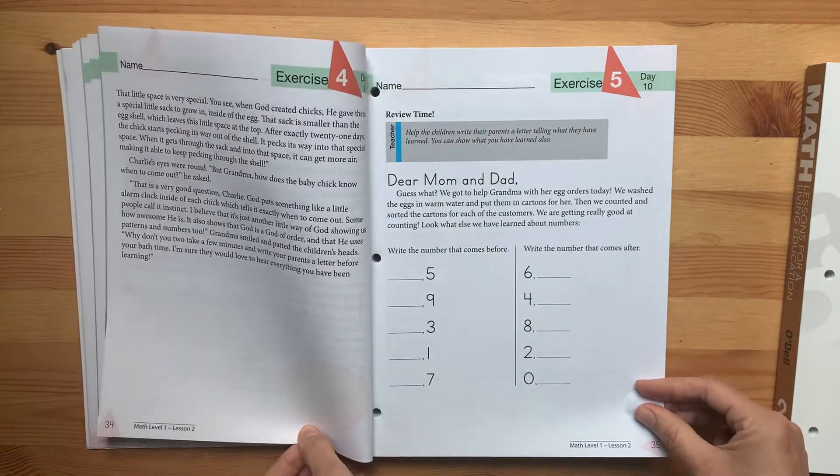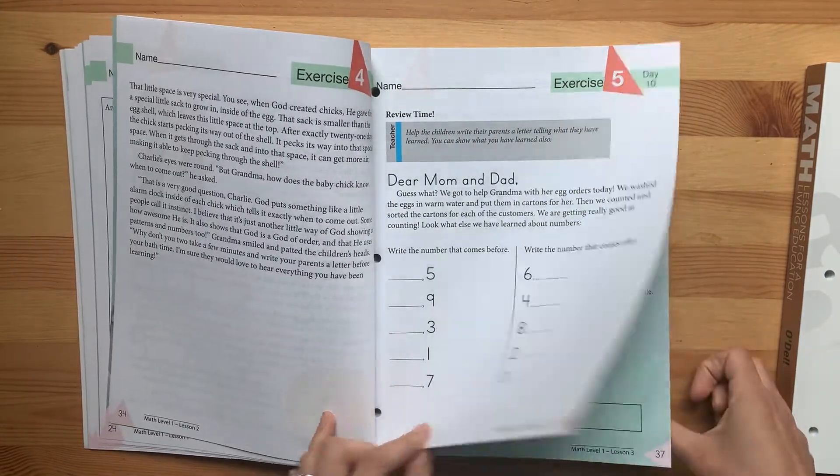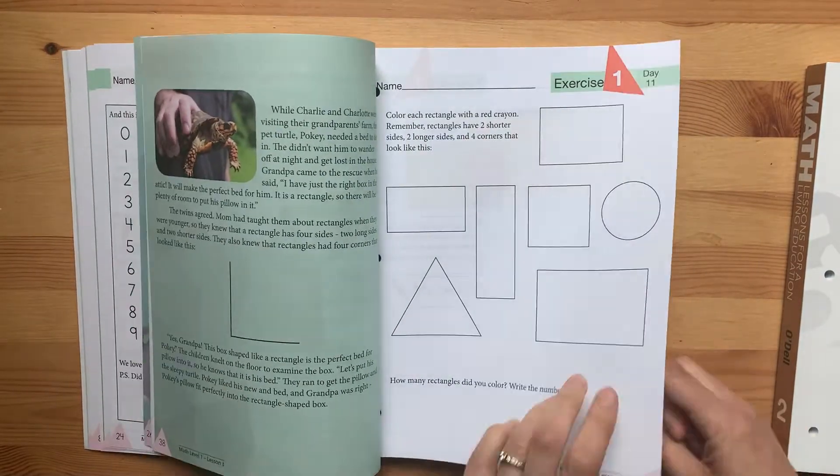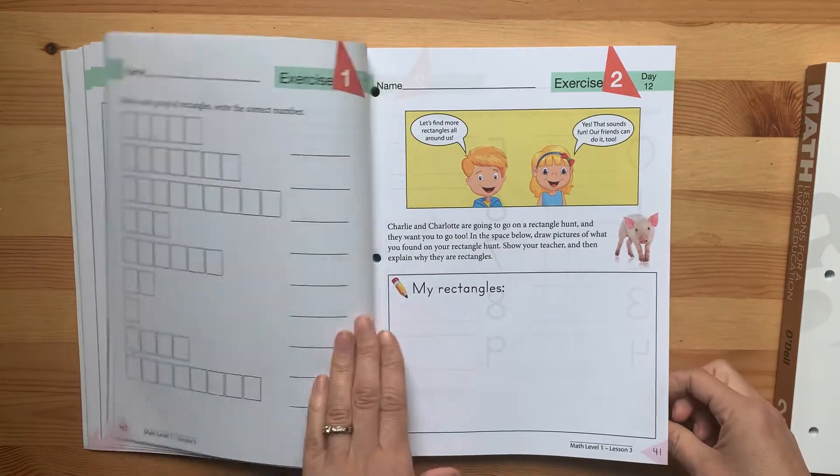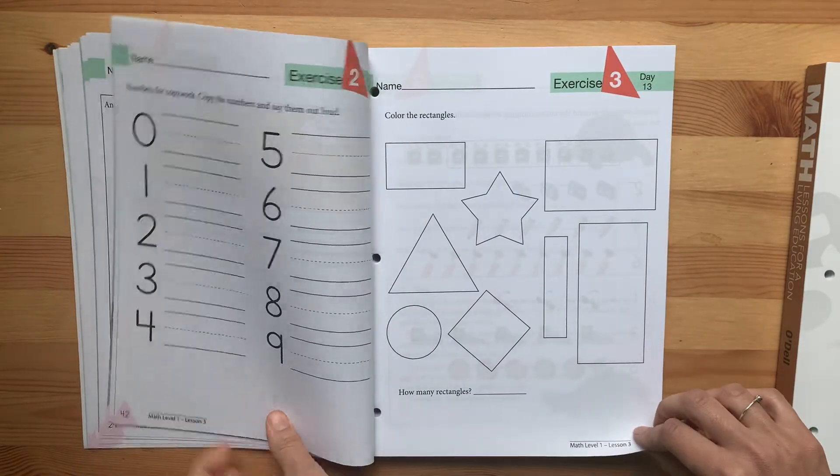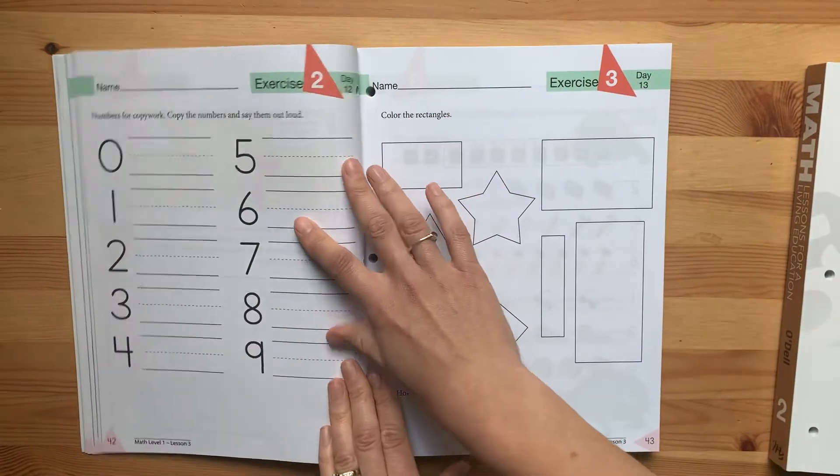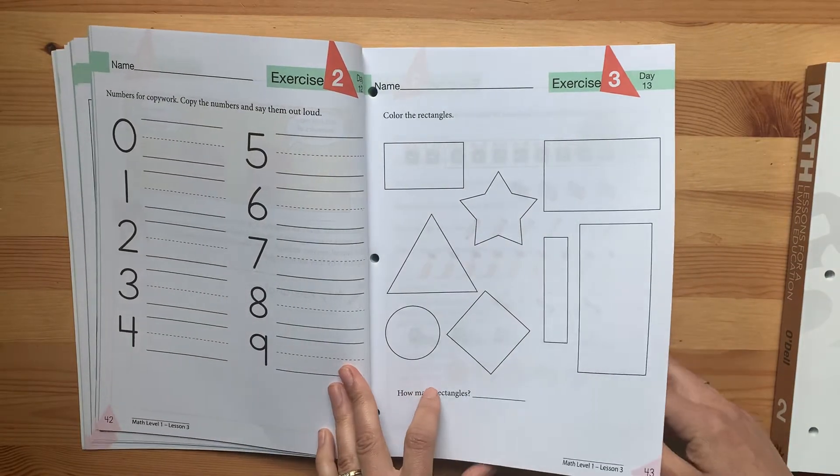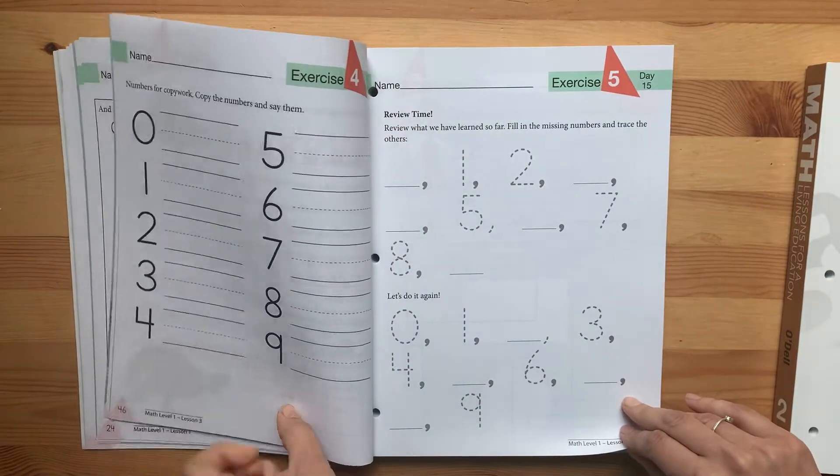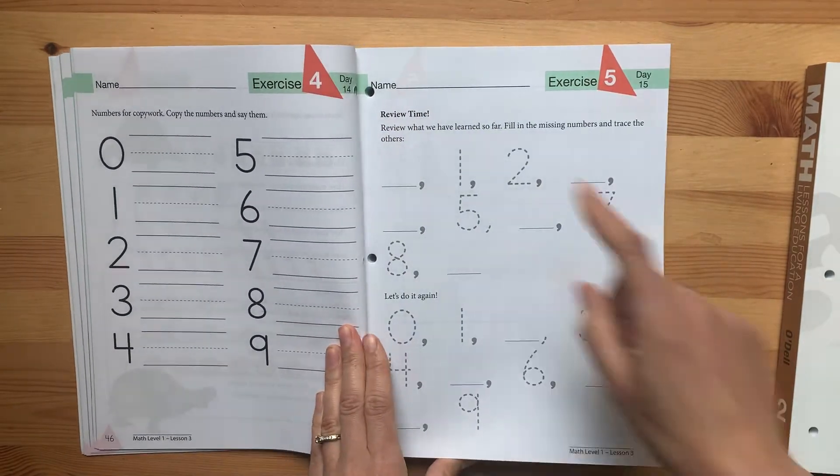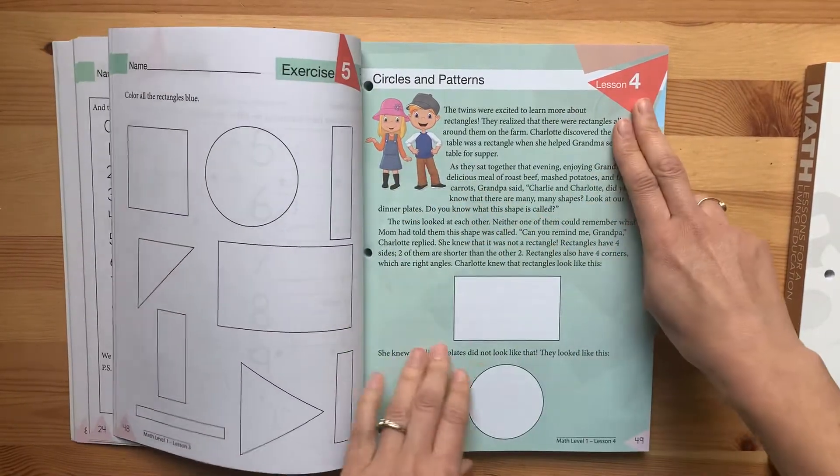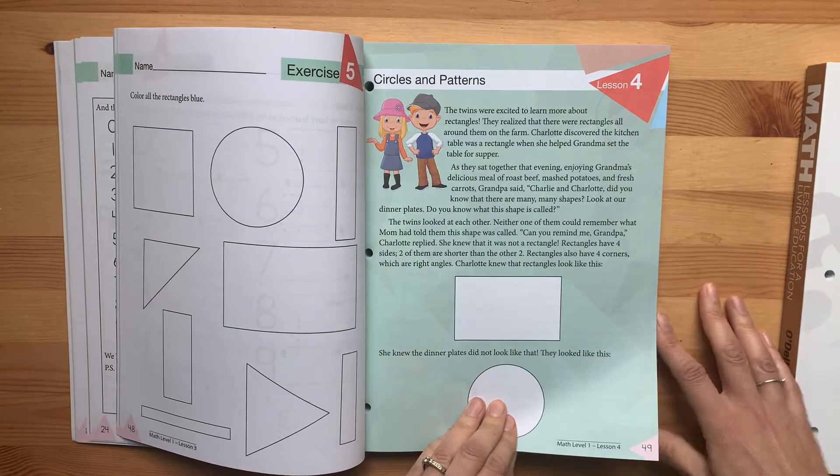Starting with zero through ten here. Shapes. Writing the number by a group of triangles or rectangles. Copywork. You can kind of gauge this as the beginning. It'll tell you day 14, day 15, and then you have your next lesson here. It always starts with the story.